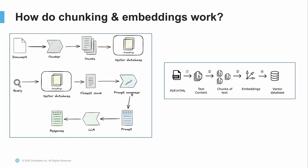Afterward, it also looks at your prompt. Suppose you want to summarize some content or you have a specific question — it looks at that prompt, passes it into the LLM, and then the LLM uses that closest chunk as well as the prompt you inputted to generate the final response. That's how the whole flow works, and that's how chunking and embeddings go hand in hand in terms of generating a response from the large language model.